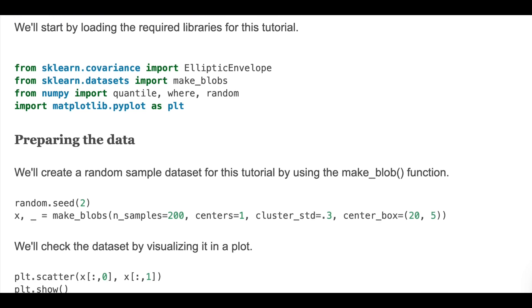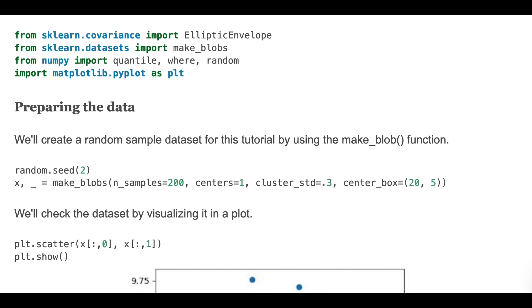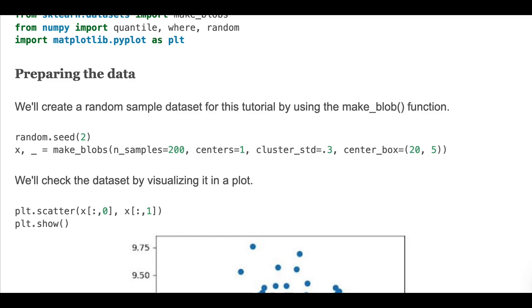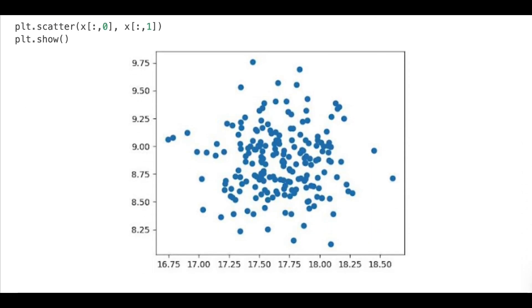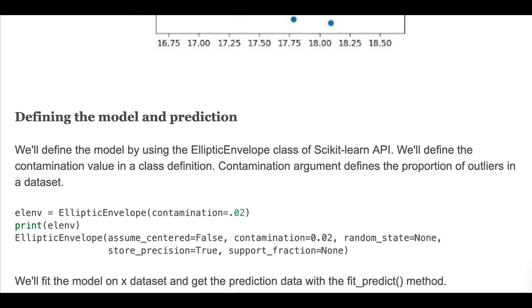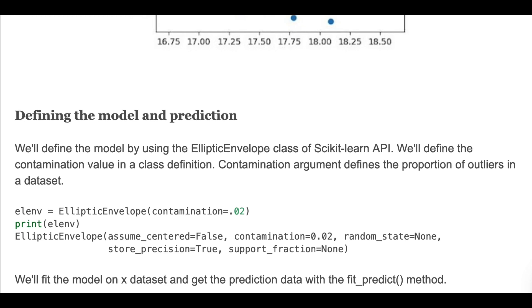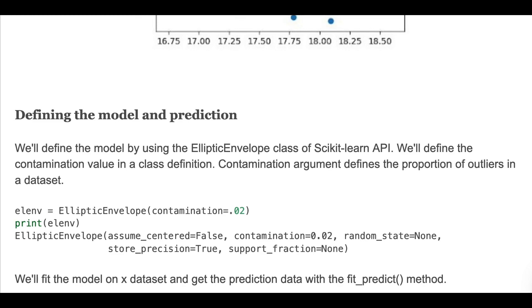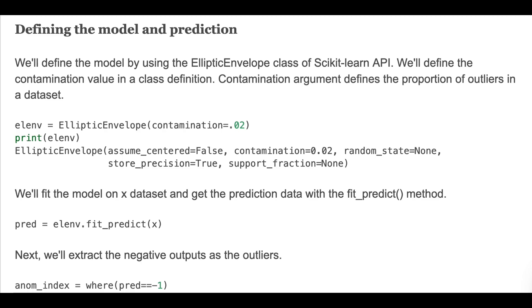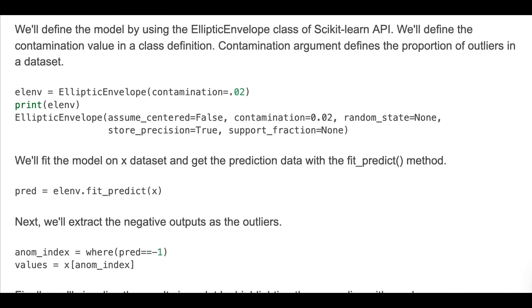Next, we'll define the model by using the EllipticEnvelope class of Scikit-learn. We'll define the contamination value in the class definition. The contamination argument defines the proportion of outliers in a dataset. We'll fit the model on the X dataset and get predictions with the fit_predict method.